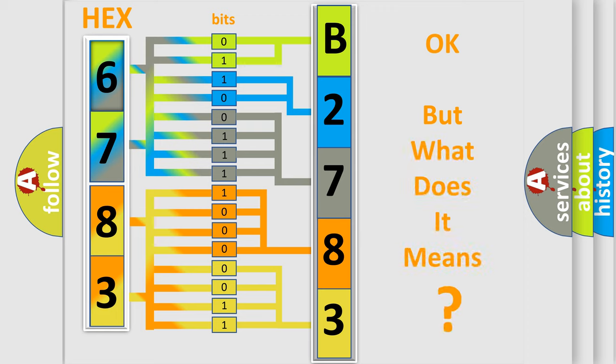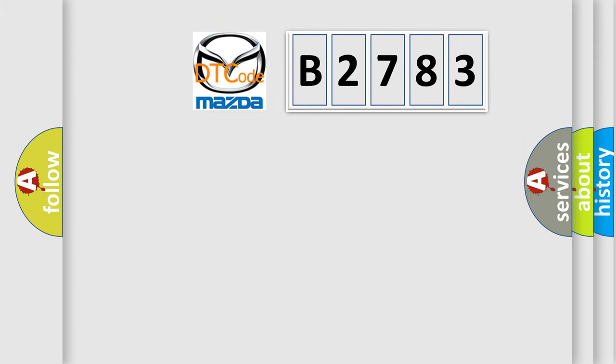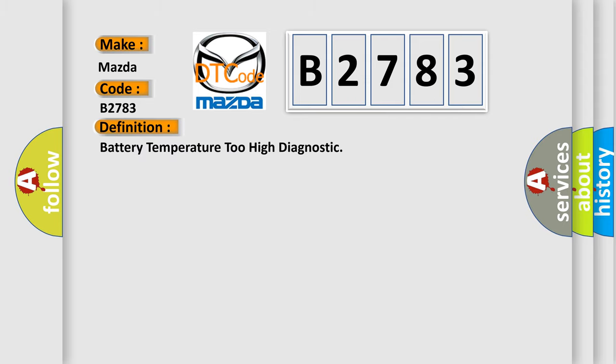The number itself does not make sense to us if we cannot assign information about what it actually expresses. So, what does the diagnostic trouble code B2783 interpret specifically for Mazda car manufacturers? The basic definition is: battery temperature too high diagnostic.